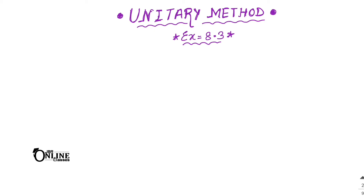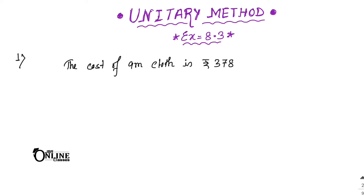Sum number 1: if the cost of 9 meters of cloth is rupees 378, write down — the cost of 9 meters cloth is rupees 378. Next, find the unit quantity: the cost of 1 meter cloth. Since we're going from greater to less, we divide: 378 by 9.